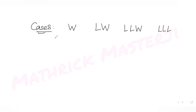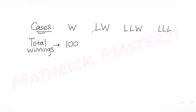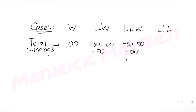Those are all four cases. Now let's find the net earnings for each. Case one — win on throw one: he gains 100 rupees. Case two — loss then win: minus 50 plus 100 gives a net of 50 rupees. Case three — two losses then a win: minus 50 minus 50 plus 100 gives net zero rupees. Case four — three losses: minus 50 three times gives net minus 150 rupees.